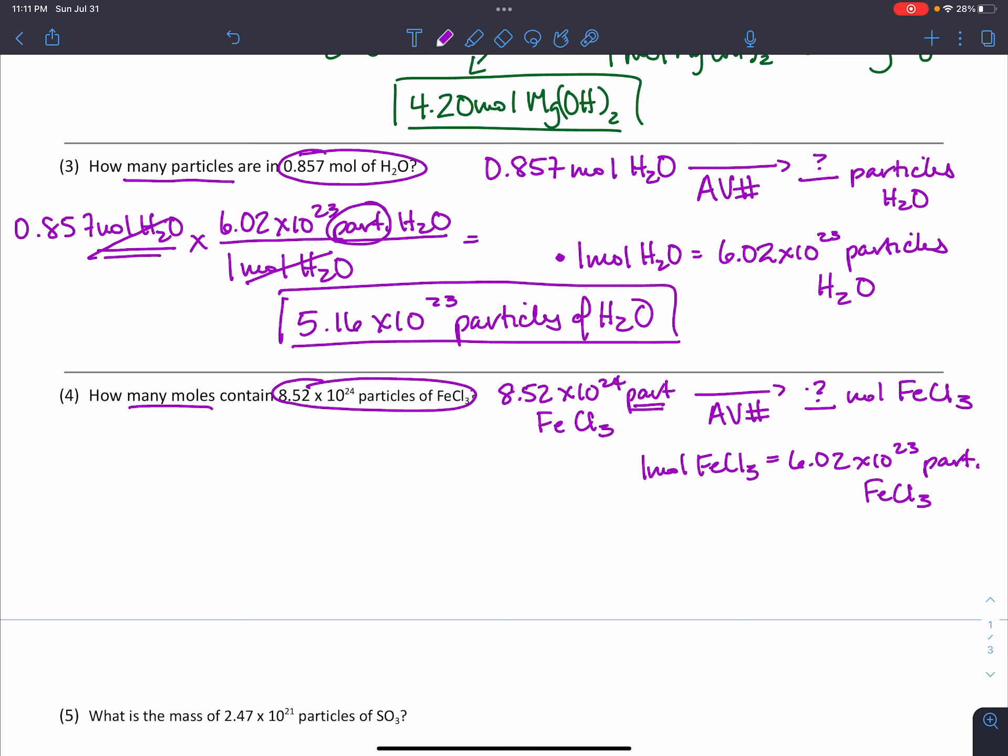So we're going to start the problem just like we did above with the number that we've been given, 8.52 times 10 to the 24th particles of FeCl3 and we want to convert. This time the mole is going to go up top because that's what we're looking for and Avogadro's number, 6.02 times 10 to the 23rd particles, will go on the bottom so that we can cancel. The particles are going to cancel, we're going to be left with moles, so now it's just a matter of using our calculator.